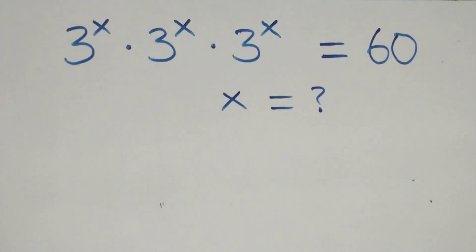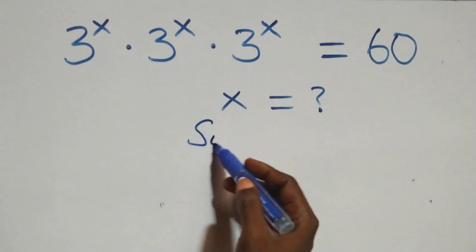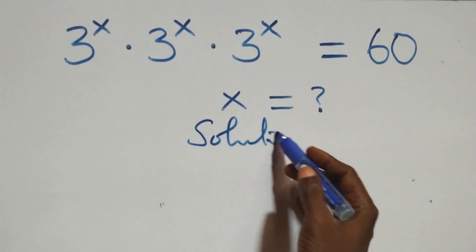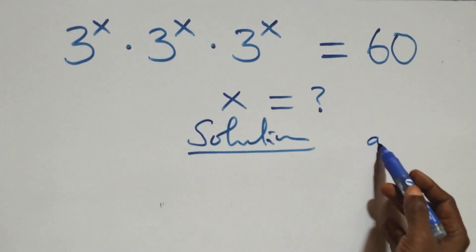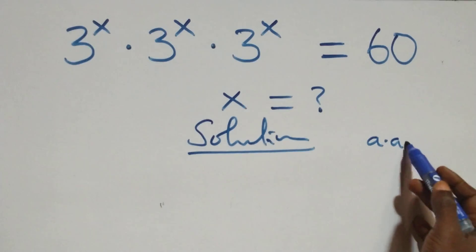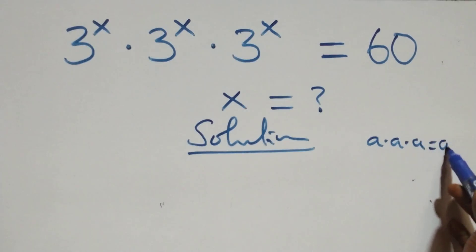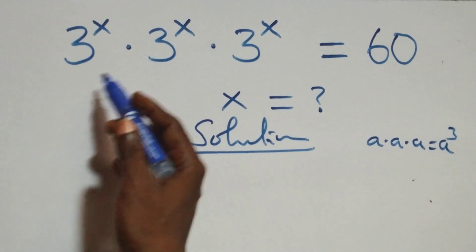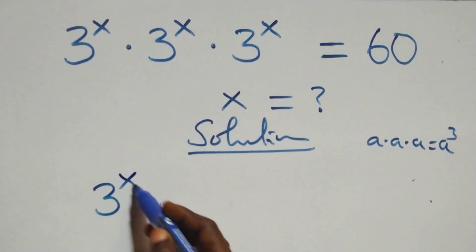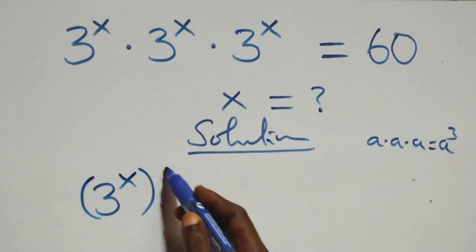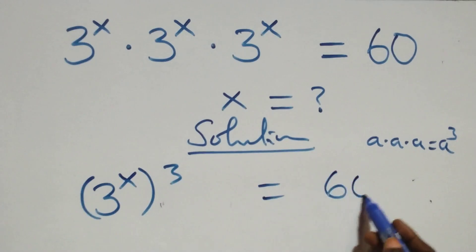Hello, welcome. Let's solve this exponential equation. What we have is a times a times a, which can be written as a raised to power three. The same thing: multiplying, we can write it as three raised to power x, times three raised to power x, times three raised to power x, equals sixty on this side.